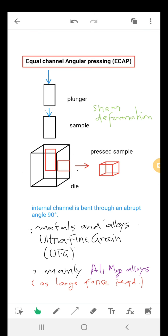There is no change in cross-sectional dimension. This is used in metals and alloys to create ultra-fine grains. Since a very large force is required, it is mainly used in aluminum-magnesium alloys, which can be easily bent. The trials for steel are still limited.